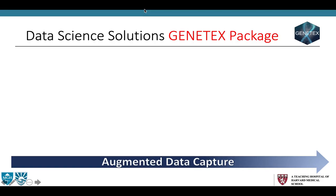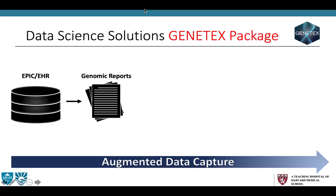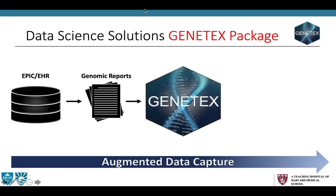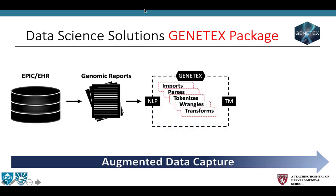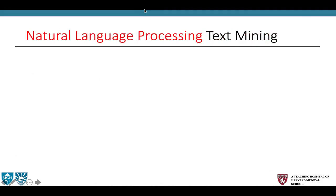Here I'm providing a schema of how Genetix works. The sequencing results and reports are often contained in the electronic health records. Whether the results are from PDF reports from commercial vendors or institutional pathology text files from the institution's next-generation sequencing platform, Genetix takes that input, imports, parses, tokenizes, wrangles, and transforms the data, and then ultimately uploads and imports it into the genomics instrument in REDCap. Now I'll hand it off to David Miller to explain how exactly Genetix accomplishes this, alongside a demo.